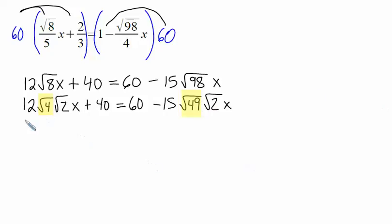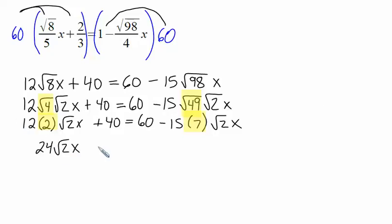So now we'll simplify. Square root of 4 is just equal to 2. I'll replace it with a 2. Over on the right, radical 49 is just equal to 7. Notice I get rid of the square root when I take the square root. So 12 times 2 is 24. We get 24 radical 2x plus 40 equals 60.